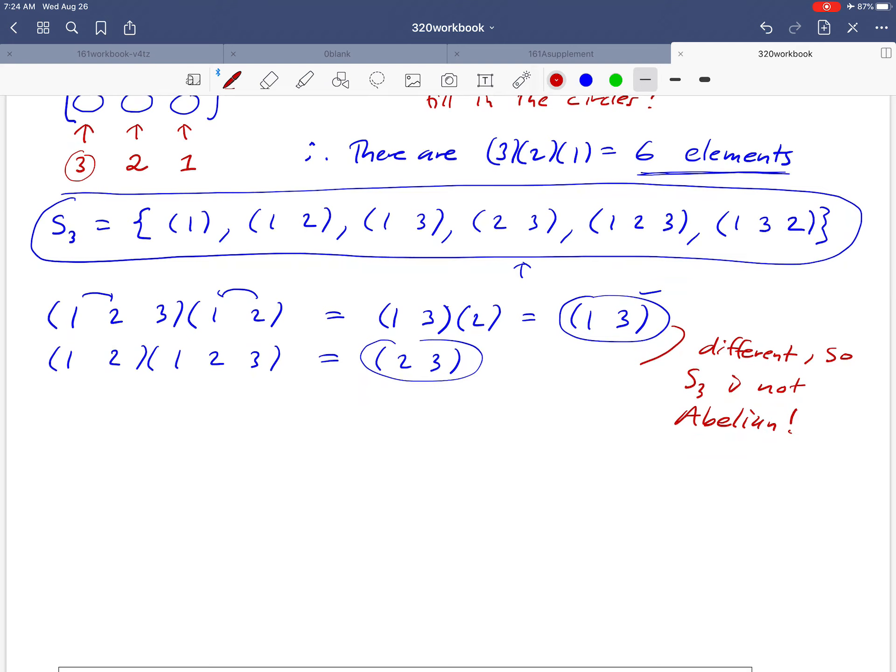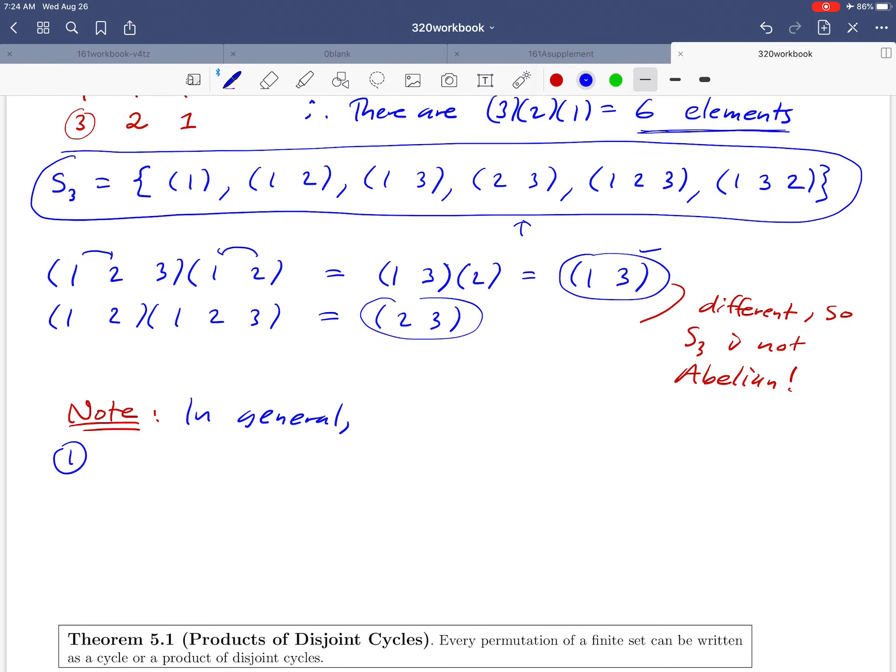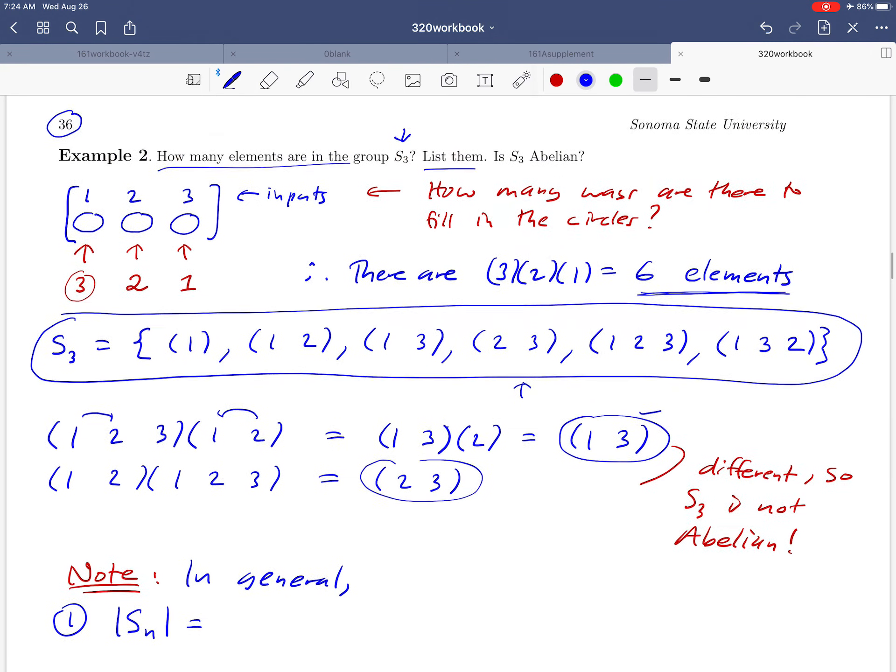All right, so what can we say in general, just kind of looking back at this example? Some of these observations we may generalize to any symmetric group. So in general, first thing is what would the order of an arbitrary symmetric group Sn be?